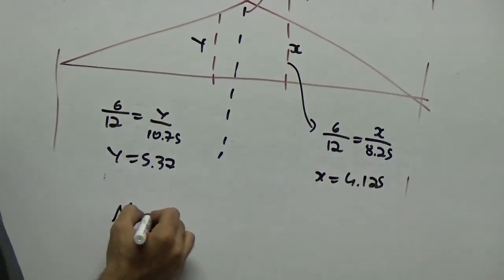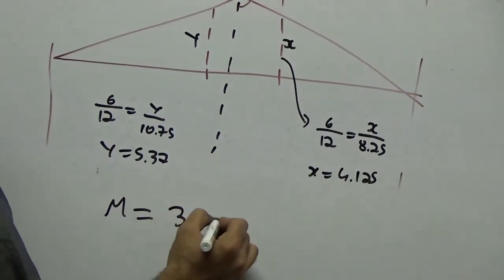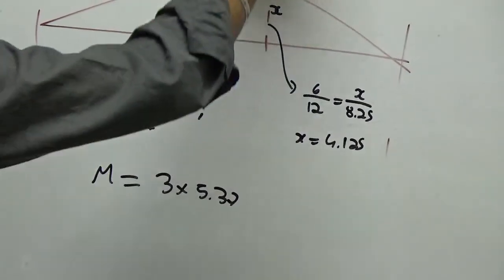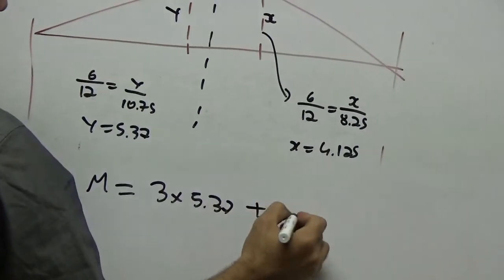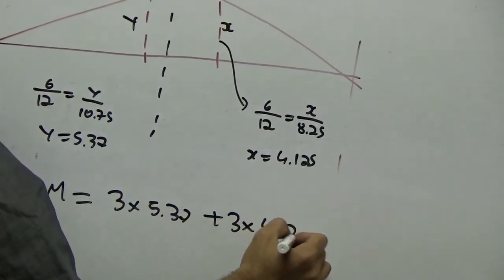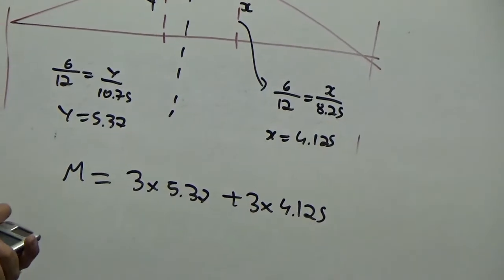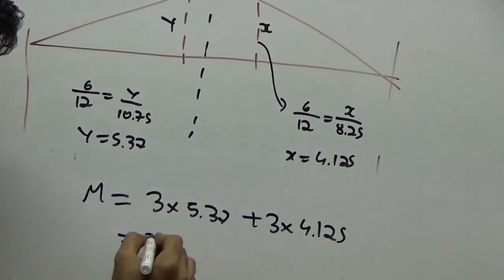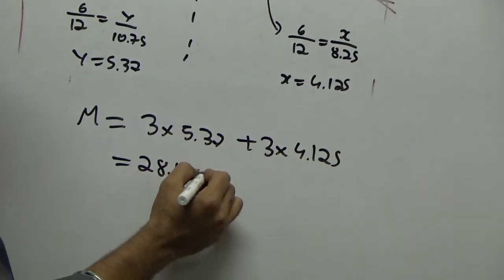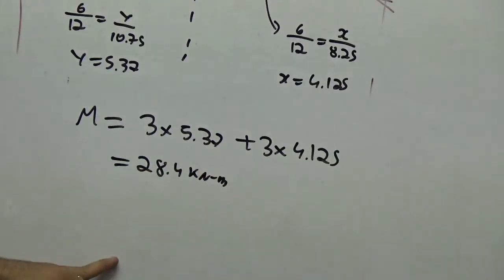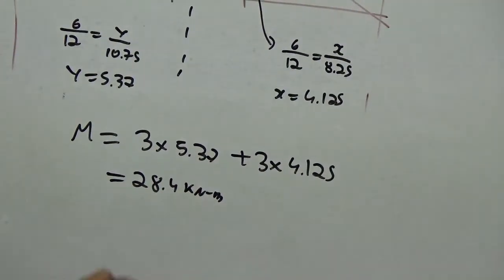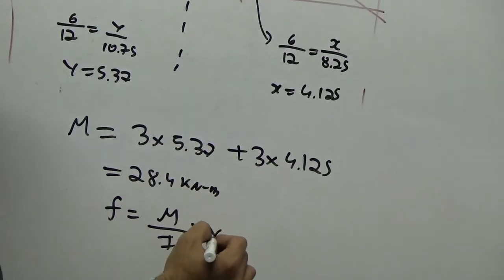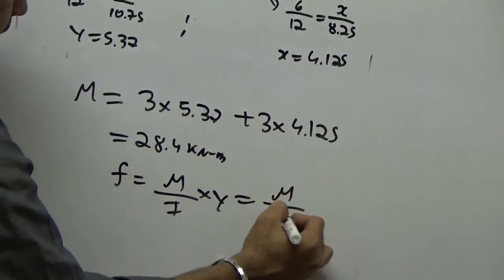The bending moment equals 3 into 5.37 plus 3 into 4.125, which gives 28.4 kilonewton meter. But the question asked for bending stress, not bending moment.